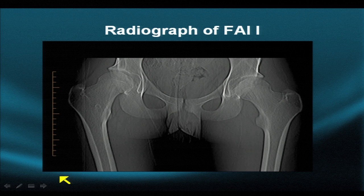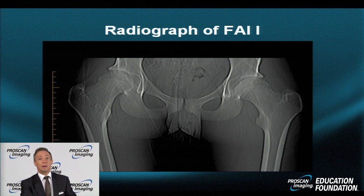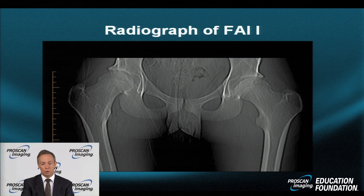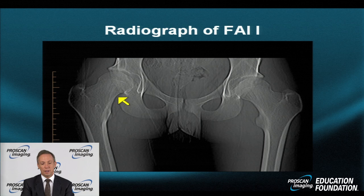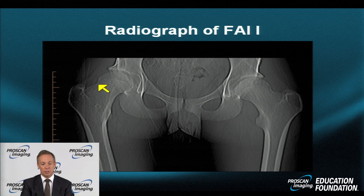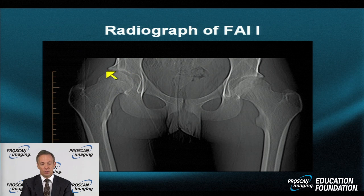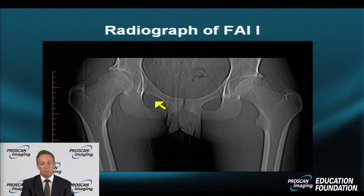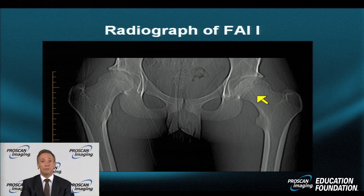This 40-something ultra-marathoner who runs between 30 and 100 miles per day in training demonstrates two of the hallmark features of FAI 1. The first is a wide femoral neck that doesn't gently taper. The neck is too wide, and thus the term 'loss of femoral head sphericity' has come to be associated with FAI 1. The neck is fatter and thicker on the right than left, even though the patient is similarly affected on both sides.